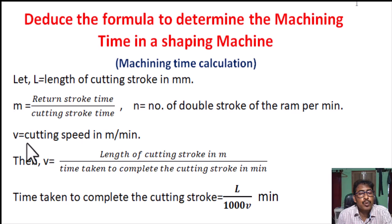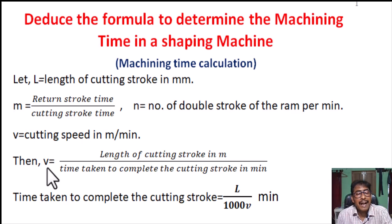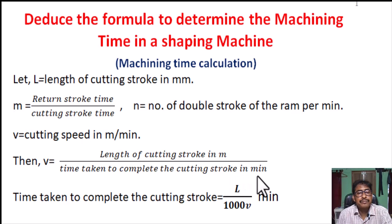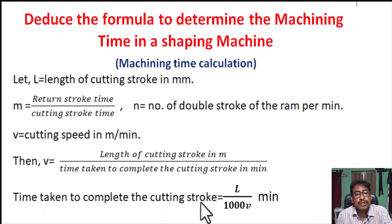Let V equal to cutting speed in meters per minute. What is cutting speed? V equals the length of cutting stroke in meters divided by the time taken to complete the cutting stroke in minutes. From this, we can say time taken to complete the cutting stroke equals length of cutting stroke in meters divided by V.